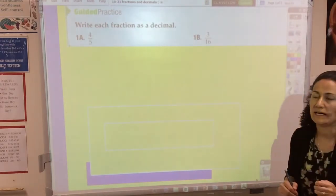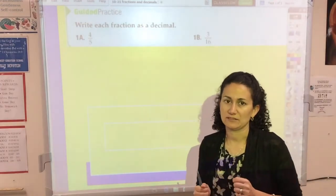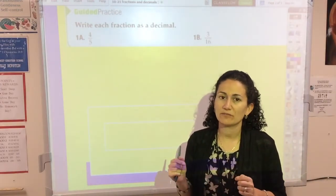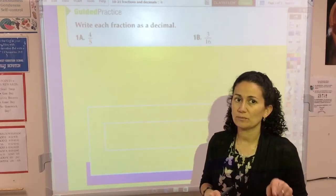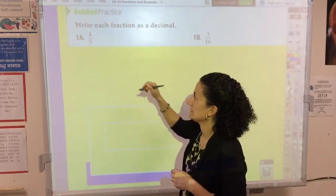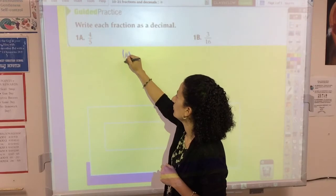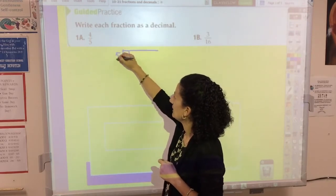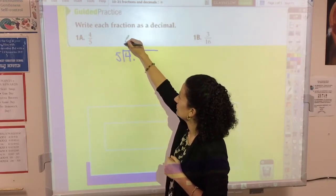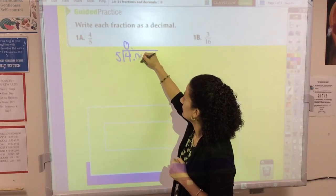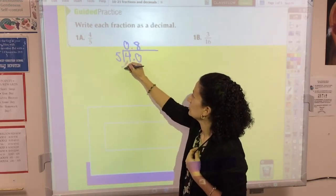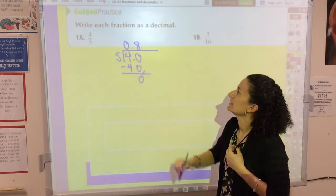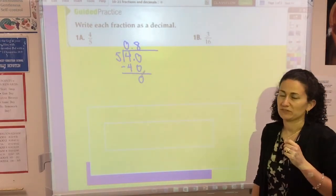Alright, let's go over how to change 4/5 to a decimal. I hope that you may have remembered an easier method, which I'm going to go over in a few minutes. But let's divide: 4/5 is 4 divided by 5. 5 doesn't go into 4. 5 goes into 40 exactly 8 times. So 4/5 is 0.8 or 8 tenths.